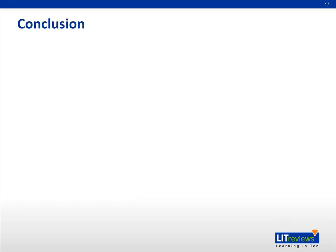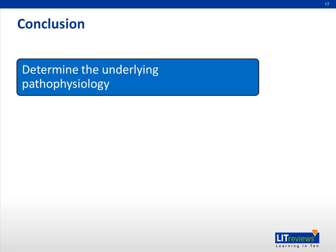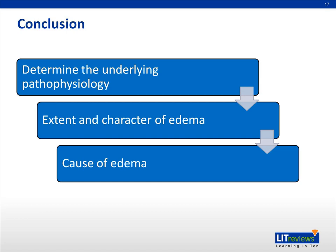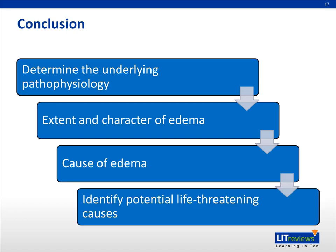In conclusion, when approaching an edematous child, we suggest: first, identify the main pathophysiology; second, determine the extent and character of the edema, such as localized or generalized; third, evaluate the possible causes; and lastly, always identify potential life-threatening causes and institute early treatment.